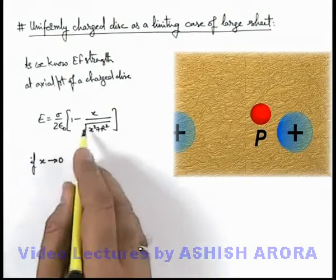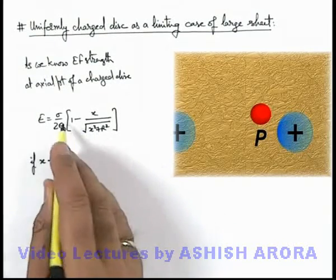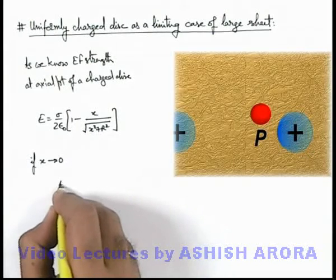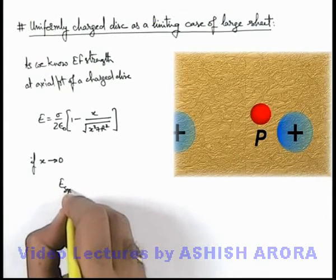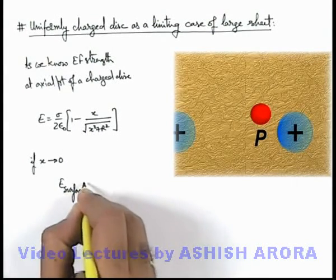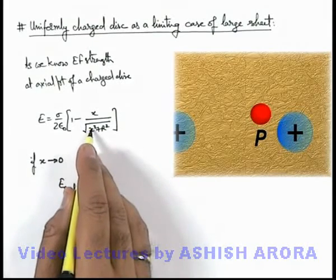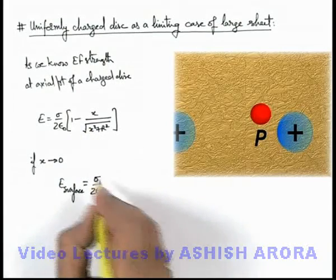So you can say in this expression, if we just substitute x tending to zero, in this limiting situation E just on the surface can be given as sigma by 2 epsilon not.